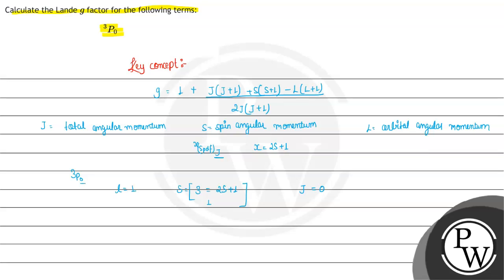So the value for j is 0. Putting the values l, s, and j into the formula, we get g equals 1 plus 0(0+1) plus 1(1+1) minus 1(1+1) divided by 2×0×(0+1). So here we will get an undetermined value.